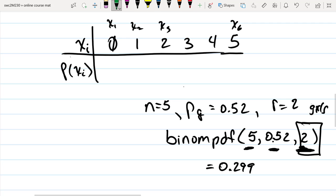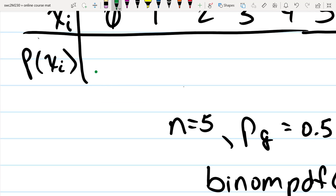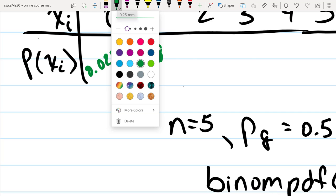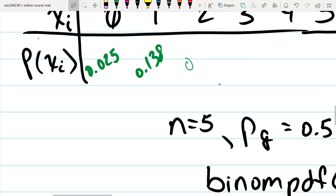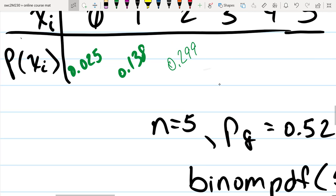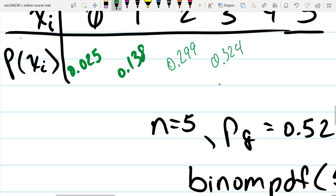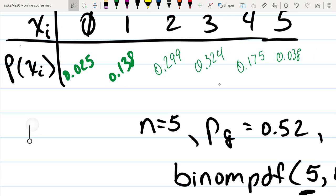0.025, 0.138, 0.299, 0.324, 0.175, and 0.038. Those are all the options.